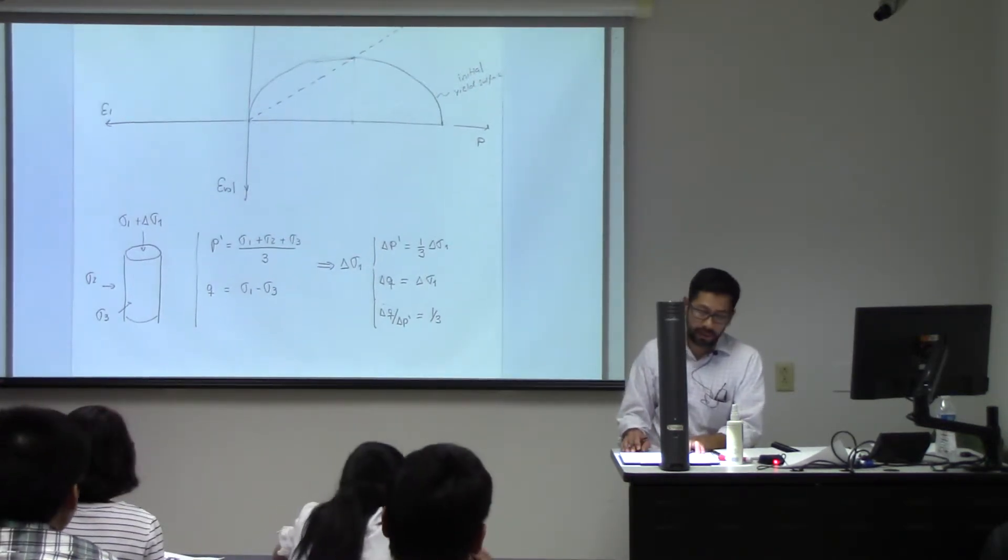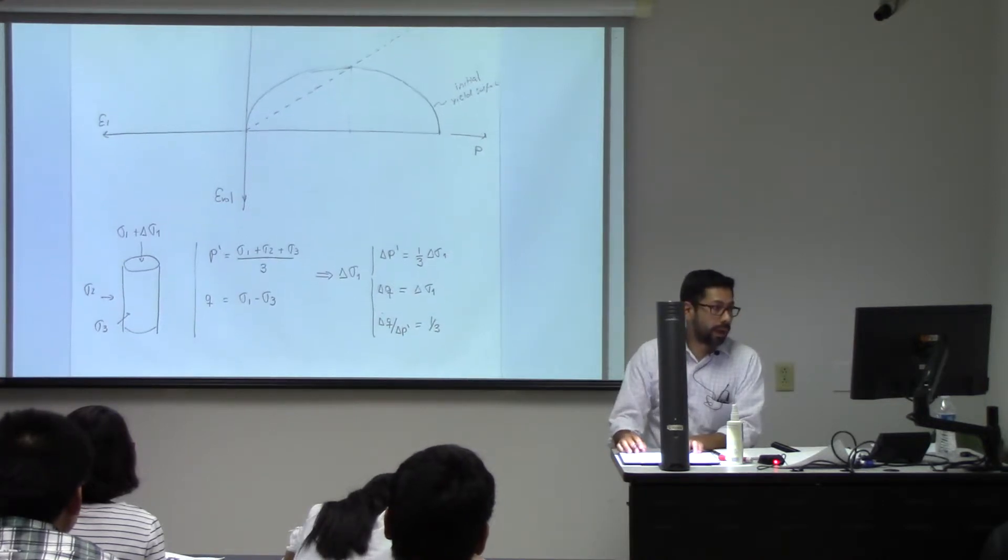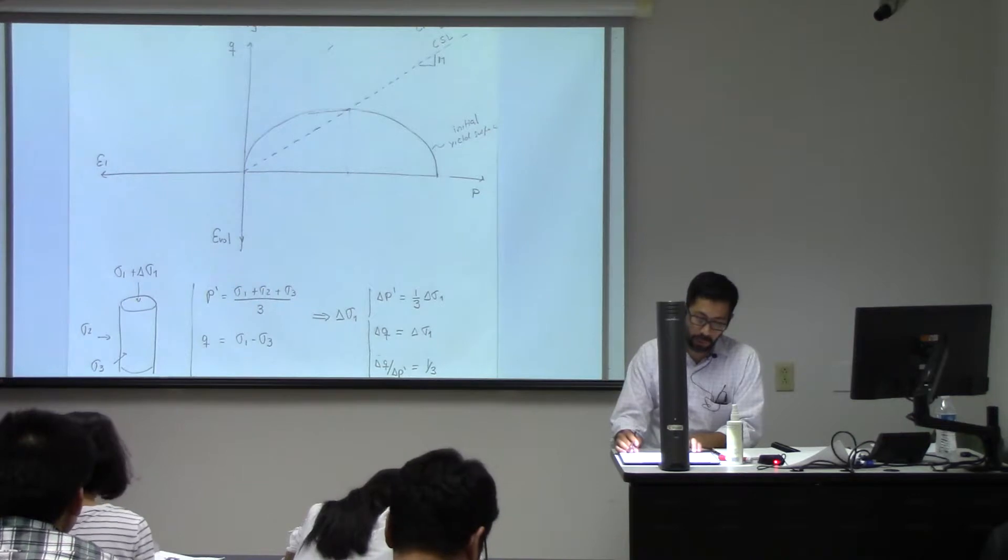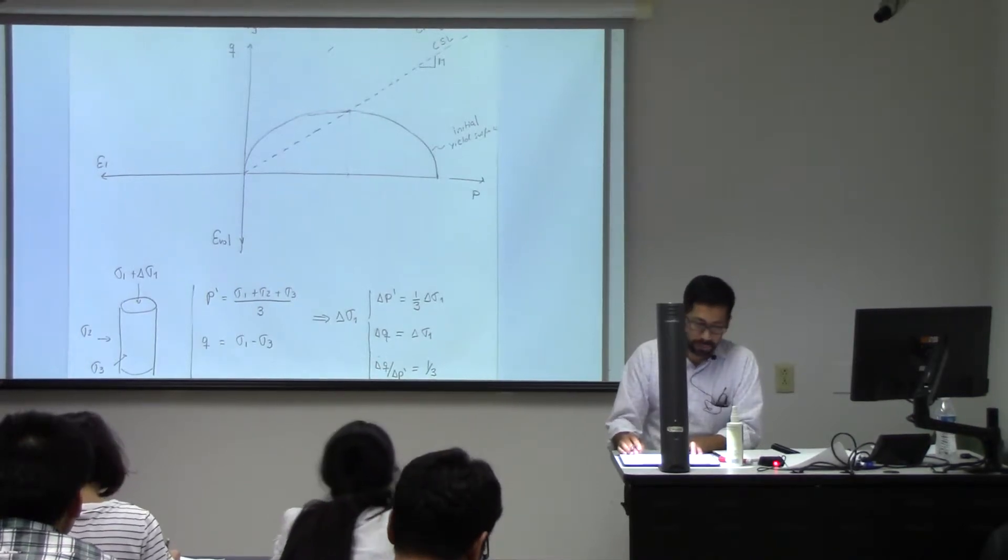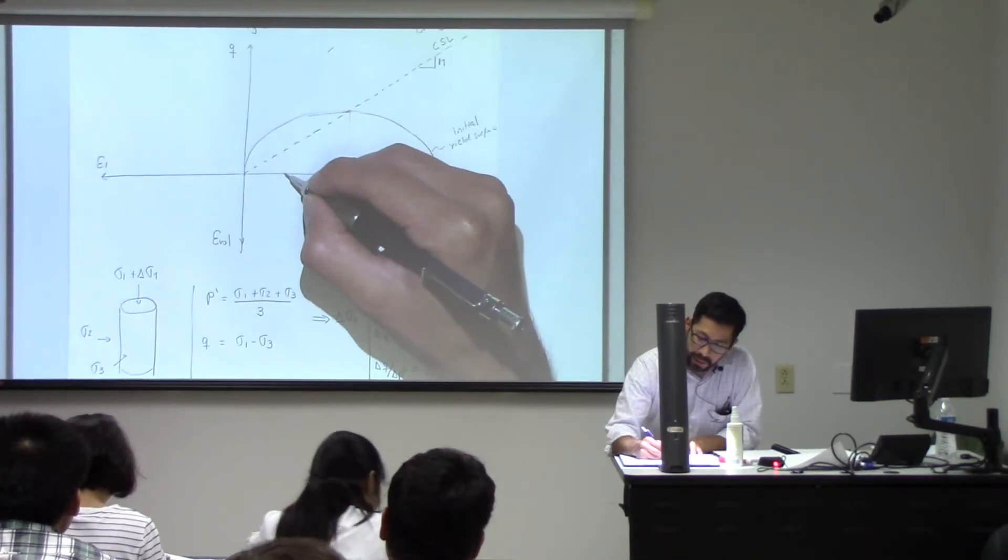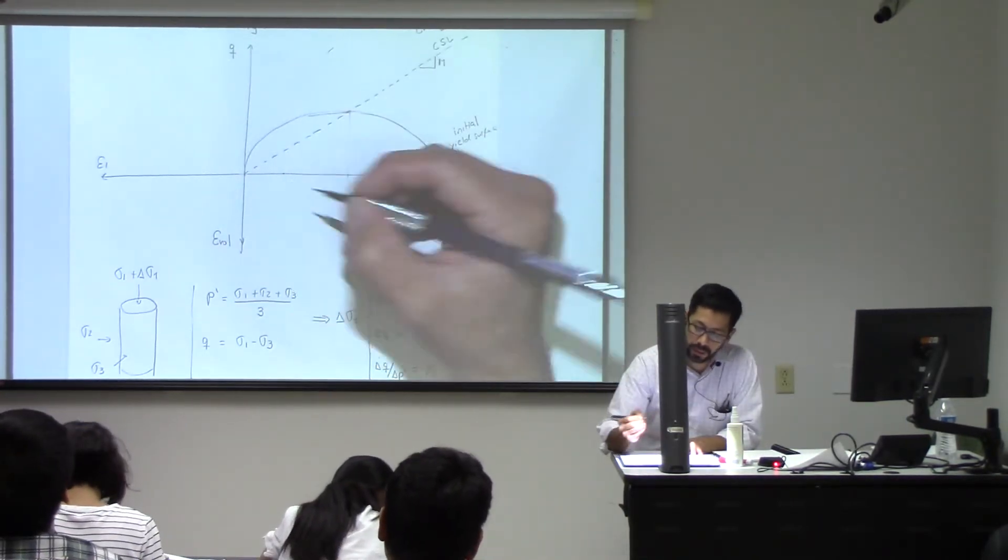So the meaning of that is that when I go to this PQ space and I want to run an experiment, the slope of such experiment, let's say I start somewhere over here.